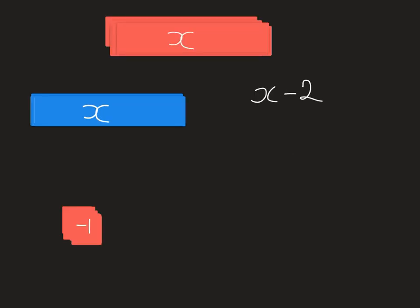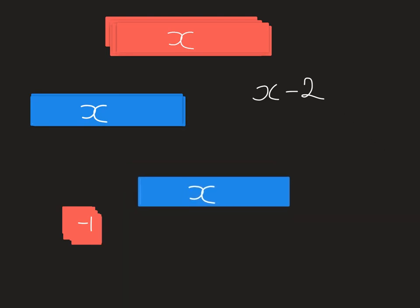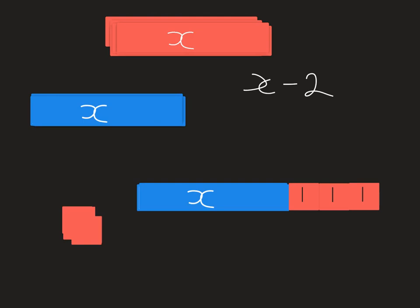Okay, let's say instead I want x take away 2. Now my x is still positive. Okay, so let's put an x there. But my take away 2, it's a negative 2 this time, so I'm going to use my red squares, which is just you turning over your other squares. So this would be x take away 3, in fact. So x take away 2 would look like that.